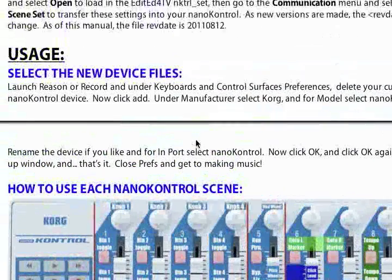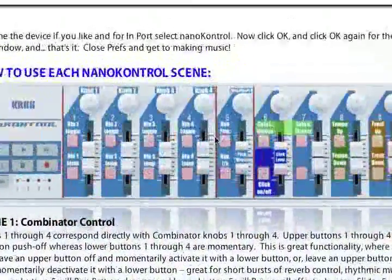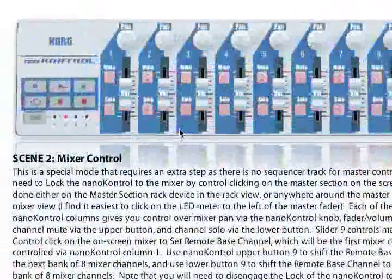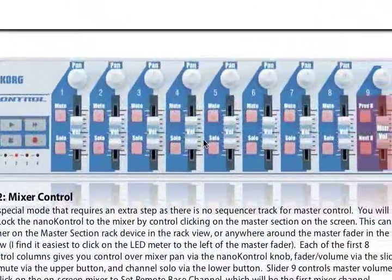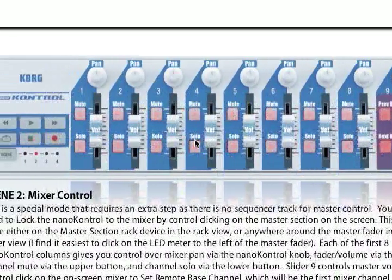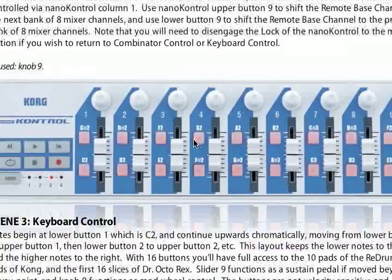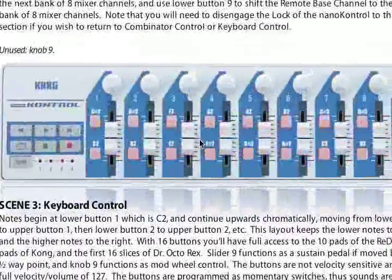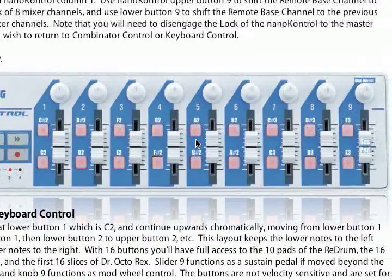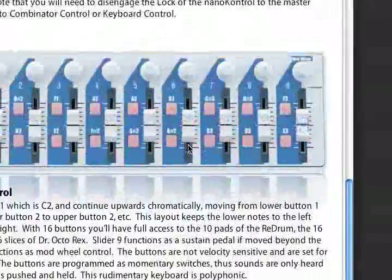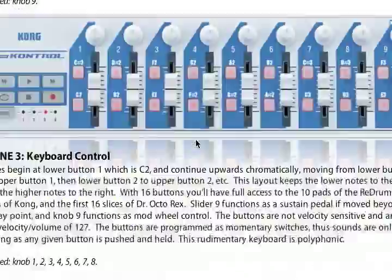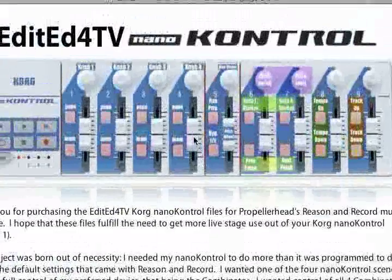There are three different scenes for the NanoControl. There's a Combinator Control, which is a number of things I'll be showing you quickly. There's also a Mixer Control that allows you to control eight channels in the Record Mixer, and also the Keyboard Control — Scene 3 — which allows you to play any device on screen with this little keyboard, plus a few additional files. That's the scoop on this manual.